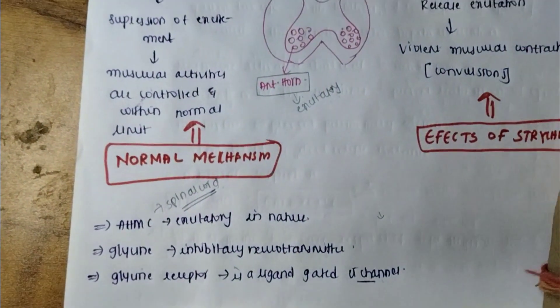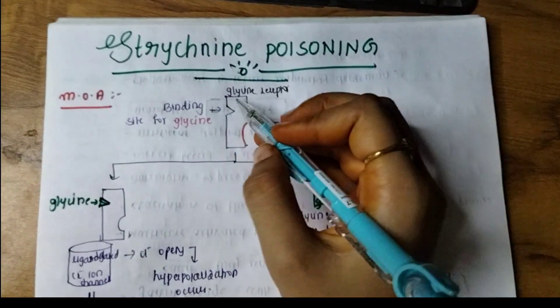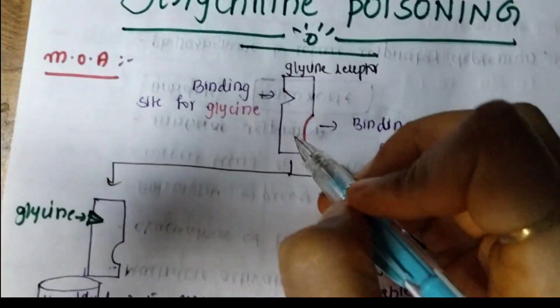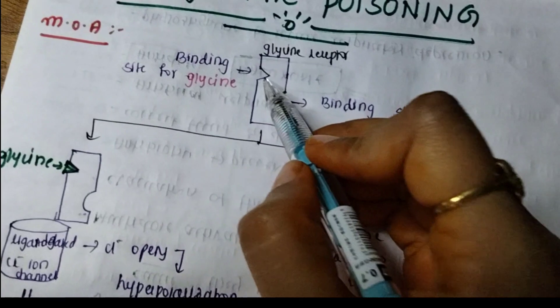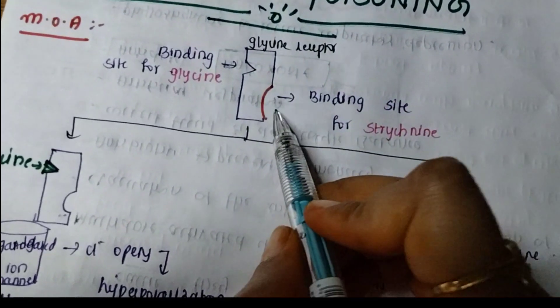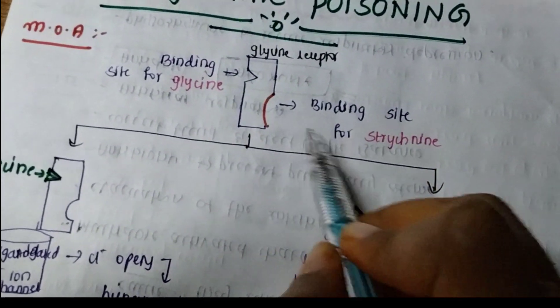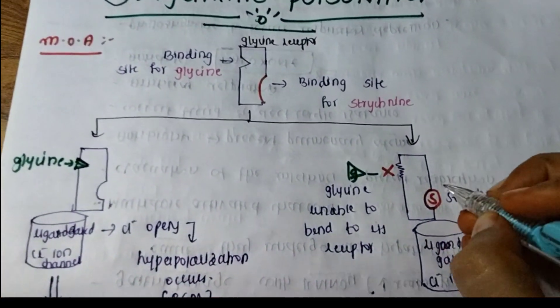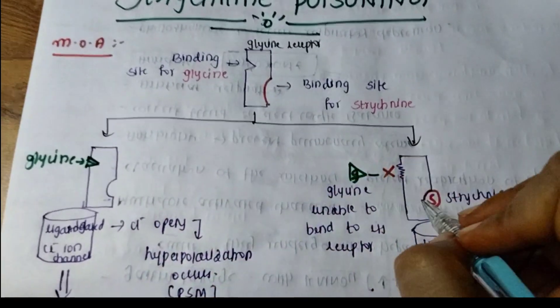Now let's get into the video. In strychnine poisoning, this is the glycine receptor. This is the binding site for glycine and this is the binding site for strychnine. I am going to show you two actions: one is the normal action of the glycine receptor, and the other is how strychnine changes this normal action into an abnormal one.